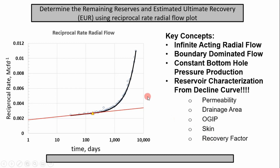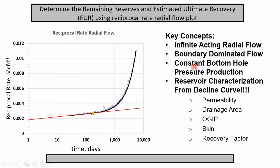The key concepts to focus on are flow regimes. In wells you have infinite acting radial flow and boundary dominated flow. Infinite acting essentially means the pressure has not yet reached the boundary. Boundary dominated means pressure has reached the outer boundary and is slowly declining. Also, when we do this analysis we're assuming a constant bottom hole pressure throughout the infinite acting region.